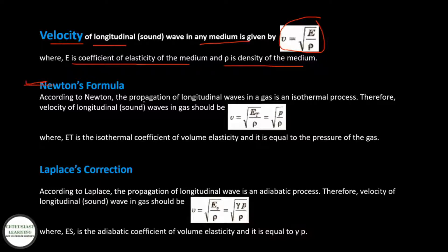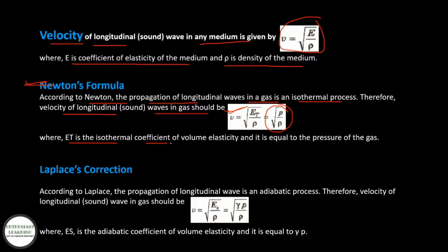Newton's formula: According to Newton, the propagation of longitudinal waves in a gas is an isothermal process. Therefore, velocity of longitudinal waves in a gas is V = √(E_T/ρ) = √(P/ρ), where E_T is the isothermal coefficient of volume elasticity and it is equal to the pressure of the gas P.